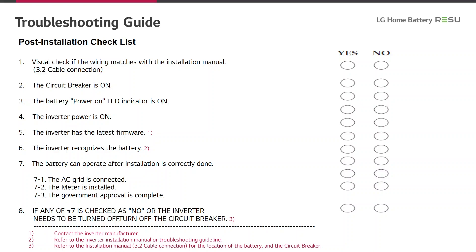On this slide, we have a checklist for you to verify whether your installation has gone right. First, make a visual check if the wiring matches the installation manual. Then check if the circuit breaker is in the on position. The battery should show by LED indicator that it is in the on position. The inverter power should also be showing on position. Please make sure that the inverter has the latest firmware. The inverter should recognize the battery. The battery can operate after installation is correctly done — the preconditions are that the AC grid is connected, the meter is installed, and all legal requirements are complete.